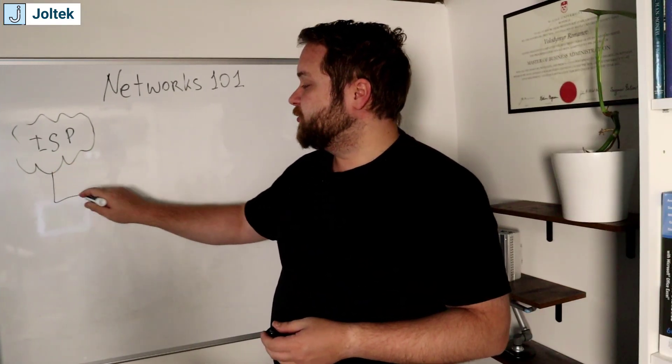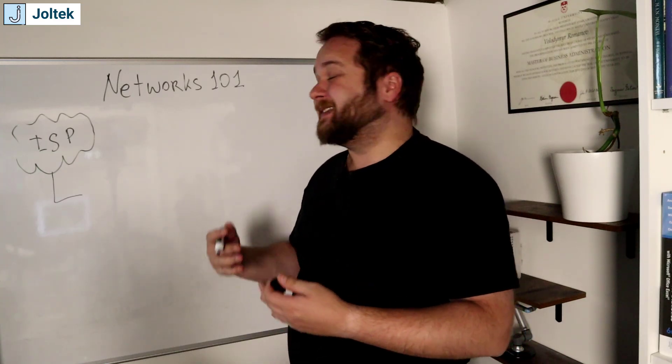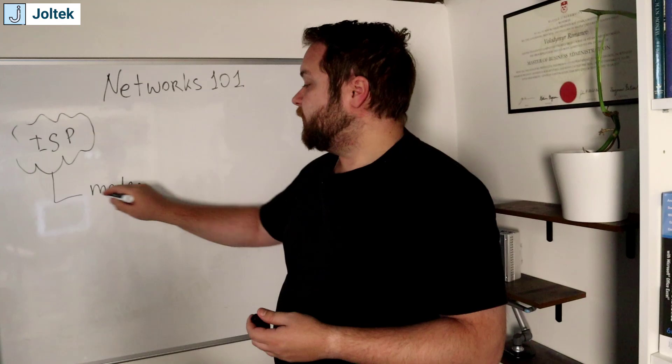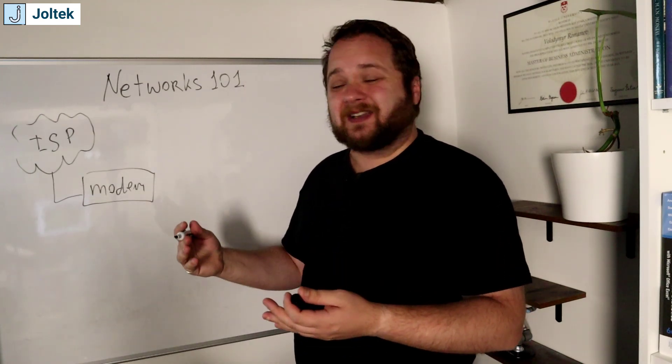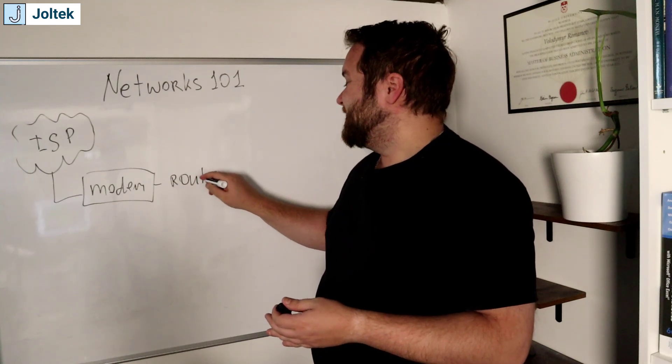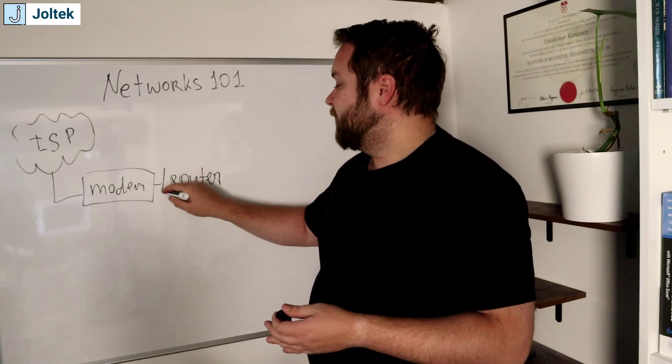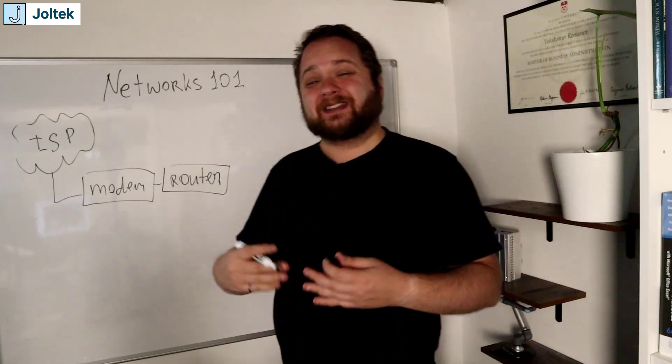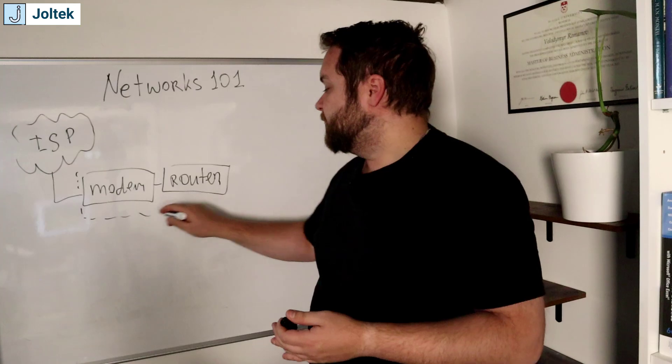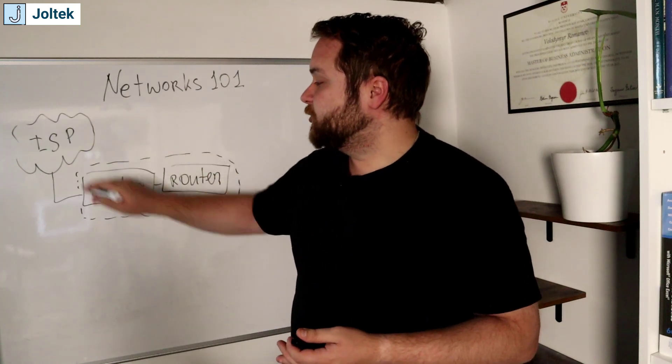So the ISP is going to have what's called a modem and then a router. In most cases, those devices in the modern architecture are going to be one single device, but sometimes they still come in a pair. What you will have inside of your house or inside of your factory are either sometimes one device, usually it is going to be one, sometimes it's going to be two devices.